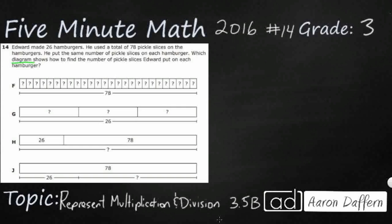Edward made 26 hamburgers. He used a total of 78 pickle slices on the hamburgers. Then he put the same number of pickle slices on each. So let's see if we can draw a picture of this. I'm not going to draw 26 hamburgers or 78 pickle slices but just so we can kind of get our brains wrapped around it.